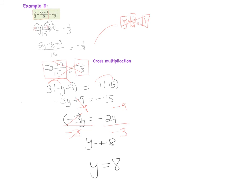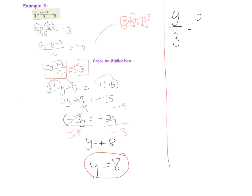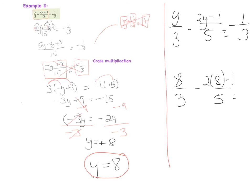Sometimes you're asked to test your answer. To check that y equals 8 works, we write the original equation: y divided by 3, minus (2y − 1) divided by 5, equals minus 1 divided by 3. Substituting y = 8 gives: 8 over 3, minus (2 times 8 minus 1) all over 5, equals minus one third.